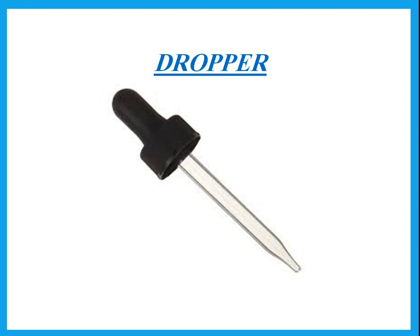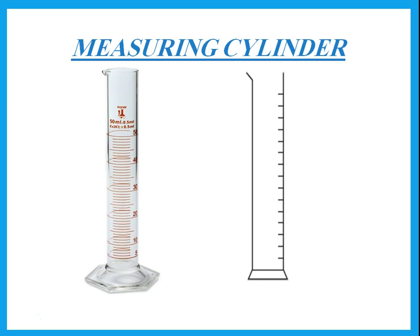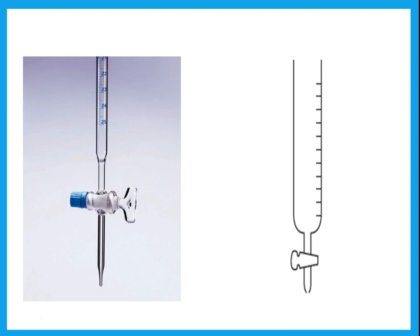What about this? This is a dropper — if I say add three drops of something, I'm using a dropper. What about this? Notice this is long and thin and it has graduations. If it has graduations it is called a measuring cylinder. What about this? Notice this has two important things — it has a tap and it has graduations. So this is called a burette. Note the spelling. The burette is used to add a certain volume of solution, or when doing titration.